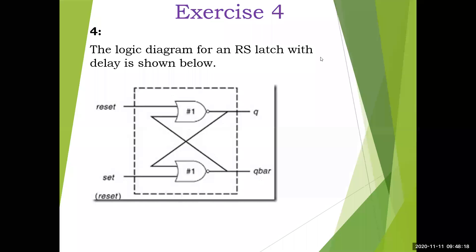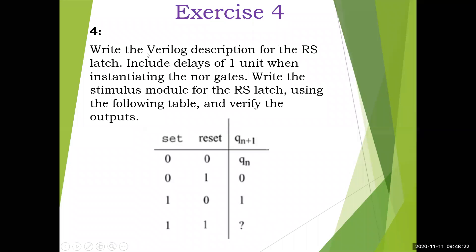You can pause the video and note down the question. For this, write the Verilog description for the RS latch and include delays of one unit when instantiating the NOR gate. There are two NOR gates — when calling those gates, you need to include the one unit delay. Also write the stimulus module for the RS latch and verify the outputs using the following table. The inputs are: 0 0, 0 1, 1 0, 1 1.